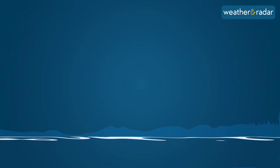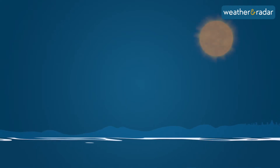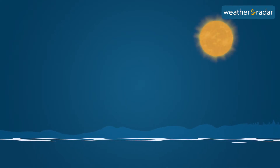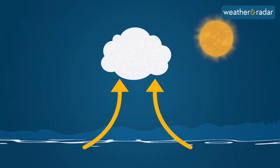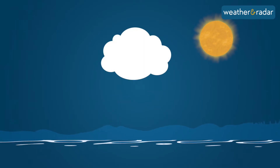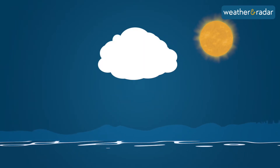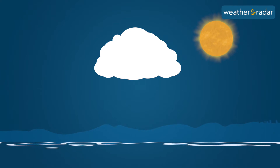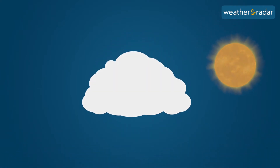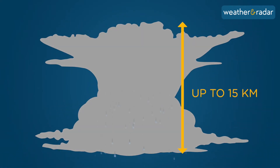The top ingredient in a thunderstorm is lots of humidity in the lowest air layers. This is how clouds are formed. When the air rises fast to high altitudes, high-reaching shower and storm clouds develop.